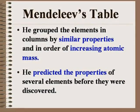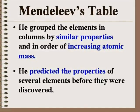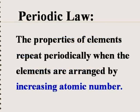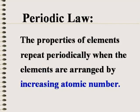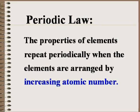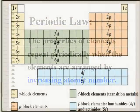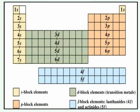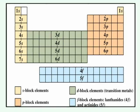Mendeleev developed the first periodic table. He placed elements in groups based on their atomic masses. We now know that the properties of elements are determined not by their masses, but by their atomic numbers and the arrangement of their electrons. We can use the SPDF blocks of the periodic table to help us see these arrangements of the electrons in atoms.